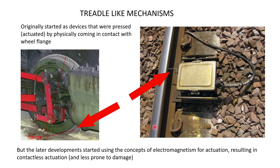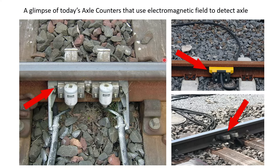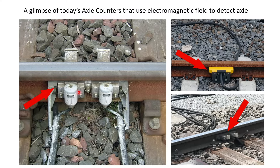Therefore, they're less prone to damage. A glimpse of today's axle counters that use electromagnetic fields — in none of these varieties does the wheel flange have to come in contact with them. All the wheel has to do is just pass over these, and the axle counters will register whether a wheel has passed over them.